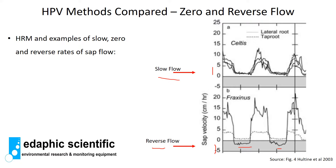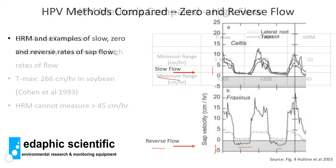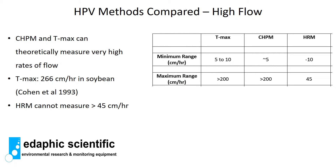The heat ratio method is great at measuring reverse and slow rates of flow. However, when you try to measure high rates of flow, the heat ratio method falls over. The maximum value the heat ratio can measure is about 45 centimeters per hour. The Tmax and compensation heat pulse methods, on the other hand, can theoretically measure very high rates of flow — over 200 centimeters per hour. The highest example I've come across in the literature is 266 centimeters per hour in soybean, published by Cohen et al. in 1993.